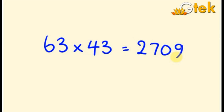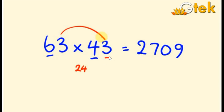So how to find this answer in an easier way? My idea is that 6 into 4 is 24, and I am going to add this 24 with 3. So 6 into 4 is 24 plus 3, and this 3 into 3 is 9. So I got the answer in an easier way.